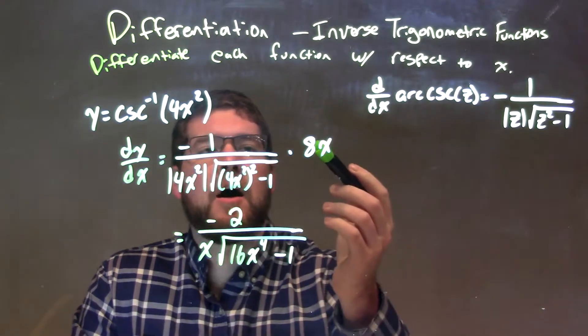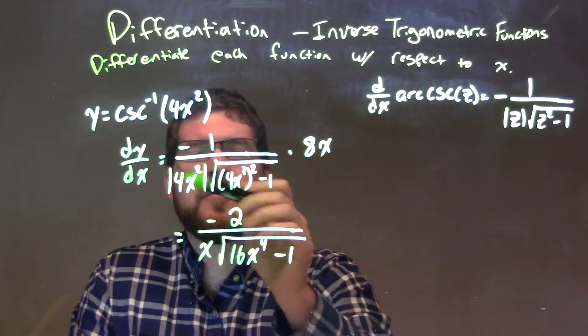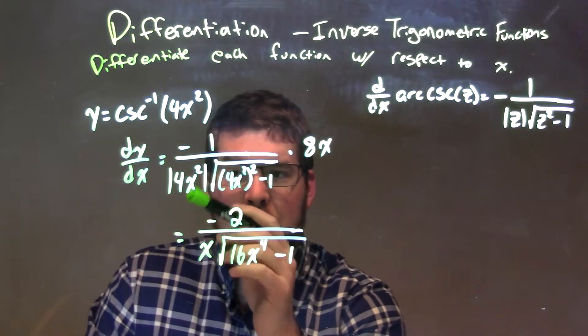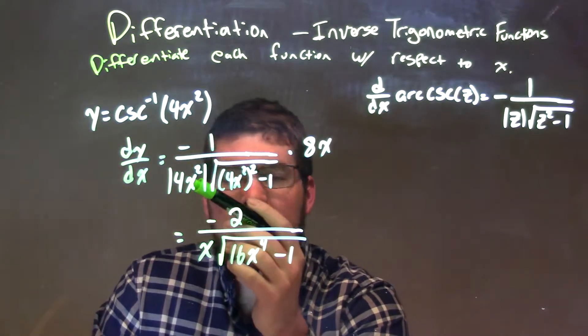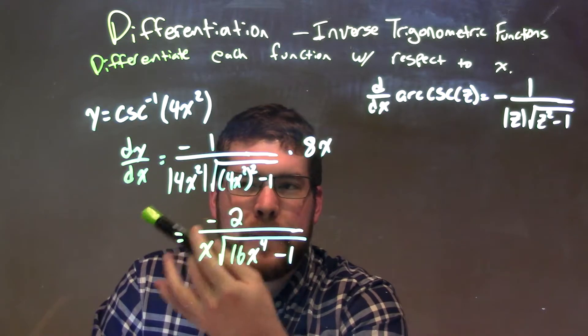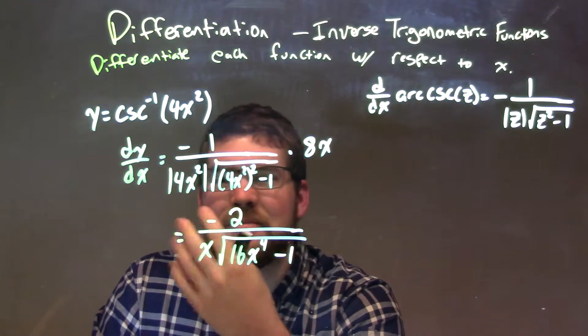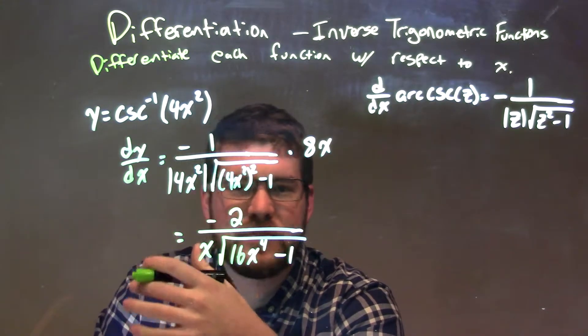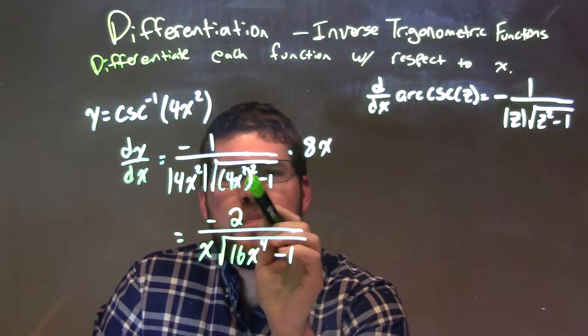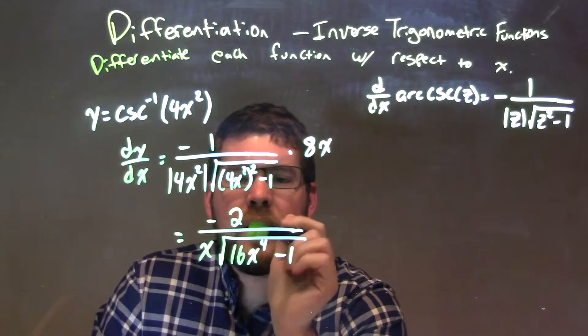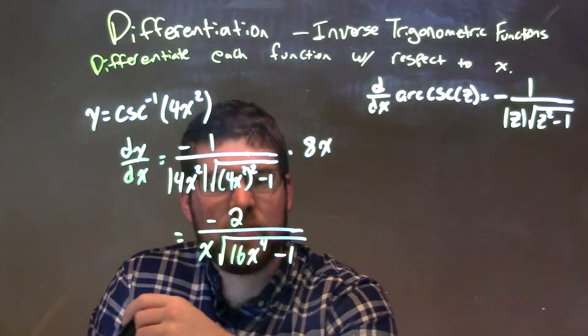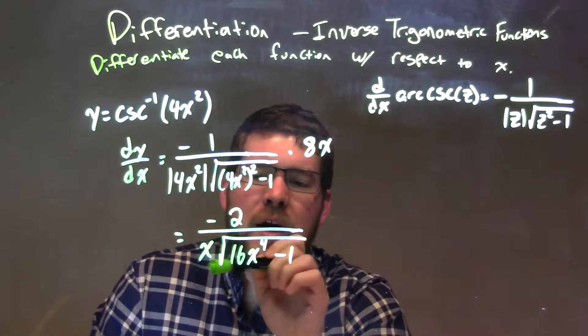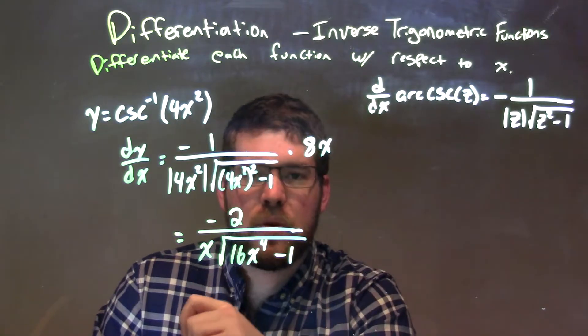From there, we simplify. The negative stays, but the 8 and the 4 cancel to 2 up top, and the x over the x squared gave me x down here. We didn't care about the absolute value, because any negative that we're plugging in there, when we square it, becomes positive. Then we take 4x squared, all squared, which is 16x to the 4th. So, my final answer is negative 2 over x times the square root of 16x to the 4th minus 1.